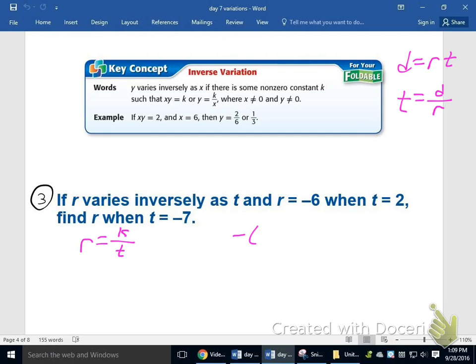So negative 6 for r, k over 2 for t. And I will multiply by 2 on both sides. And I will get negative 12 is my constant variation. So I now know my function, that r equals negative 12 over t.